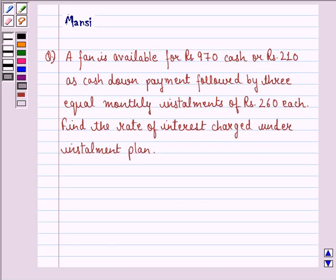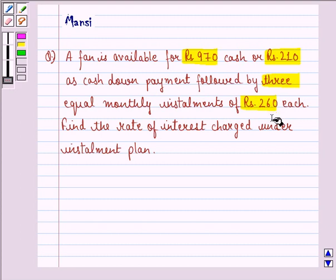Hi and welcome to the session. Let's work out the following question. The question says: A fan is available for Rs. 970 cash or Rs. 210 as cash down payment followed by 3 equal monthly installments of Rs. 260 each. Find the rate of interest charged under the installment plan.